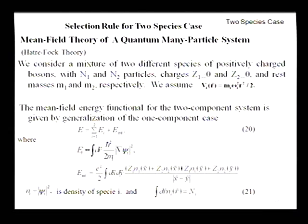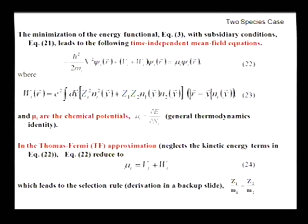Now, there's one additional theoretical work we have to involve. And that is the selection rule for two species case. We will be using a mean field theory of a quantum system, Hartree-Fock, this is misspelled, Hartree-Fock theory. And if you consider two systems in the same trapping potential, one can work it out, mean field energy functional. This comes from standard Hartree-Fock theory, which is written in this way. And eventually, you end up with a time-independent mean field equation, shown here, where w is the interaction term and mu is the chemical potential.